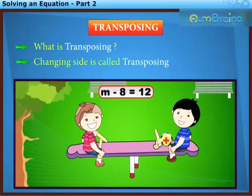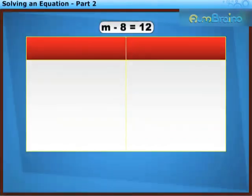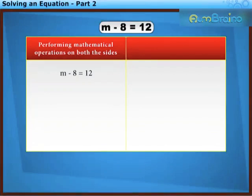For example, m minus 8 is equal to 12. First we will solve it by performing the same mathematical operations on both the sides. So we will add 8 on both the sides of the equation.